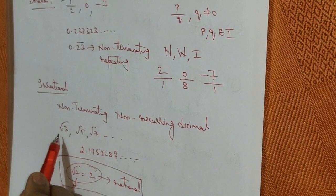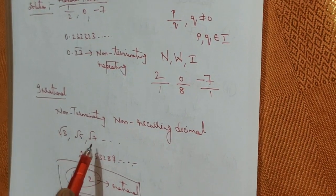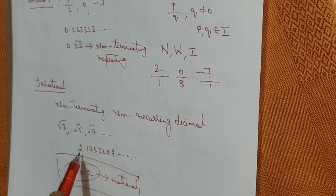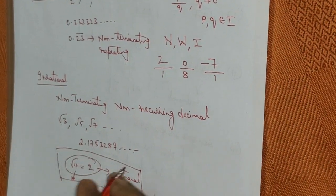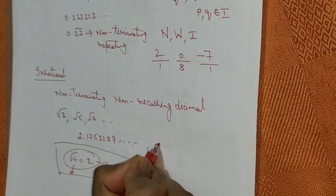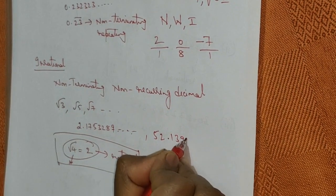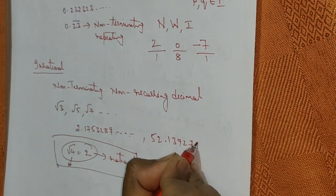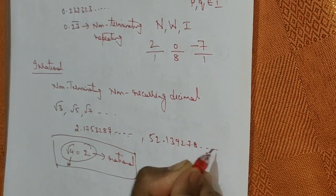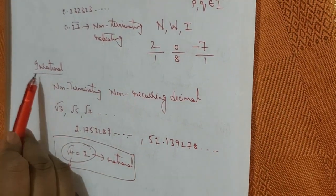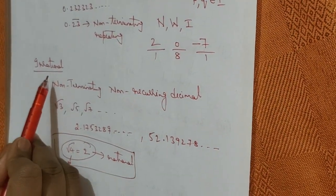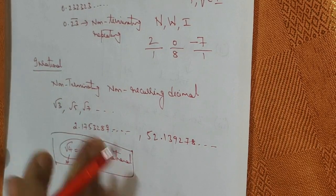So you can give examples as root 3, root 5, root 7, or 2.17..., or 52.139278 and so on. All these are examples of irrational numbers.